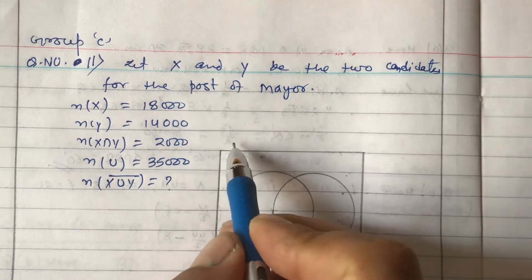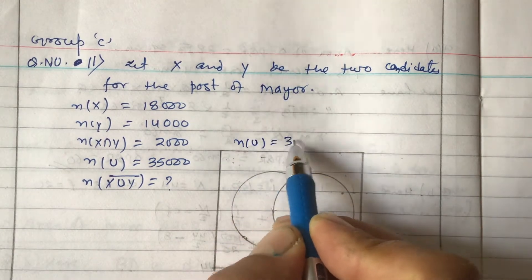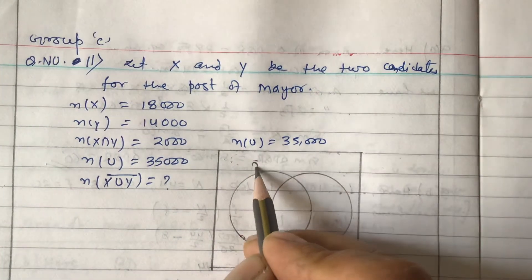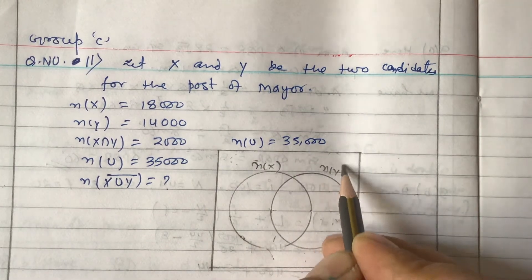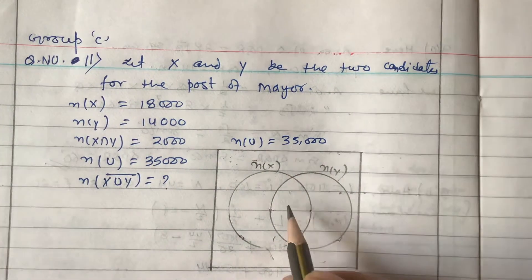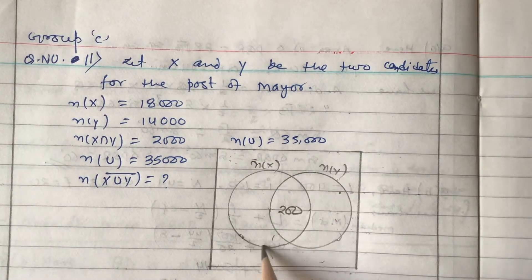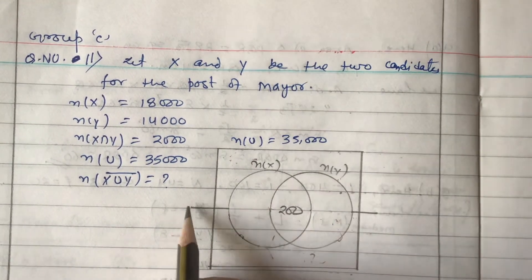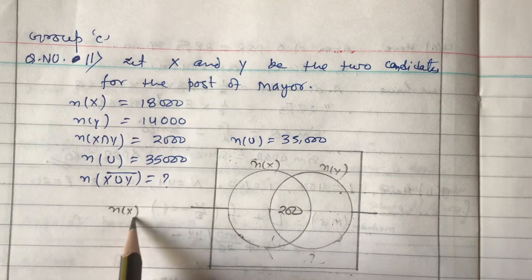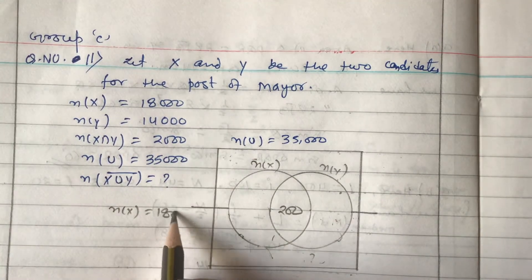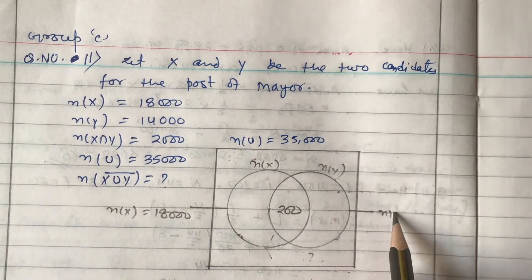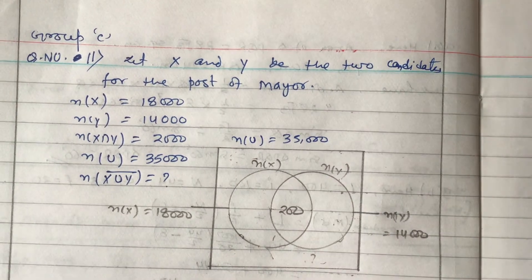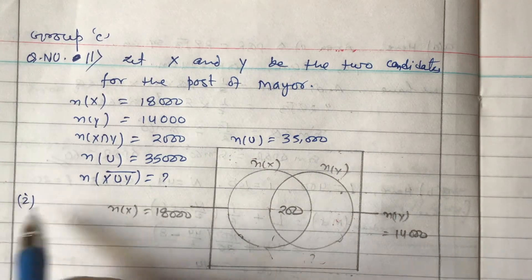Let us fill in the Venn diagram. n(U) = 35,000. The intersection part n(X∩Y) = 2,000. n(X) = 18,000 and n(Y) = 14,000. This completes the answer to question number one — showing the information in a Venn diagram.